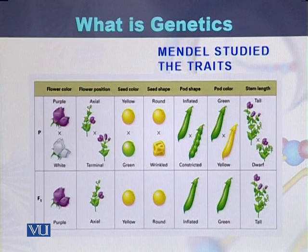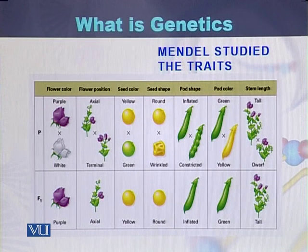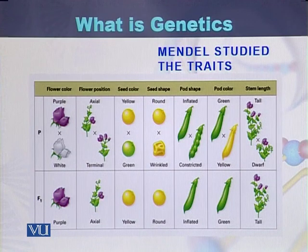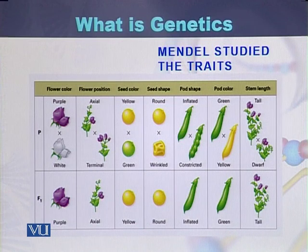Here is the list of characteristics or properties of the garden pea. Flower color was purple and white. Flower position was axial and terminal. Seed color was yellow and green. Seed shape was round and wrinkled. Pod shape was inflated and constricted. Pod color was green and yellow. And plant height was tall and short.